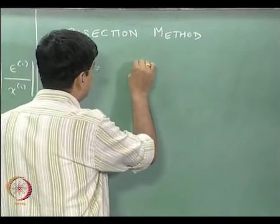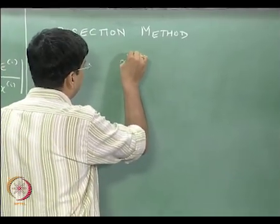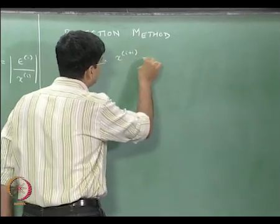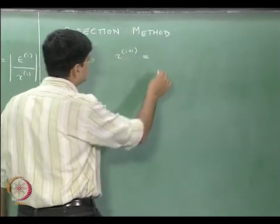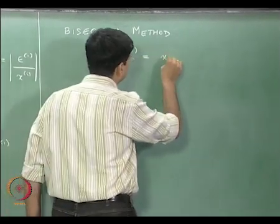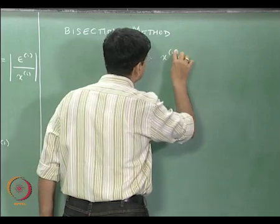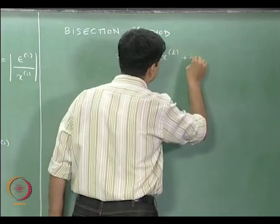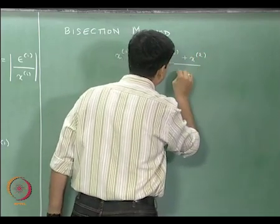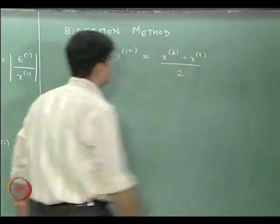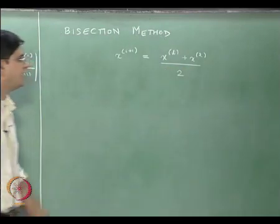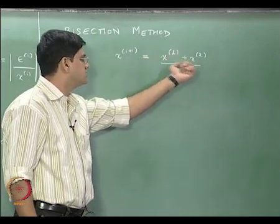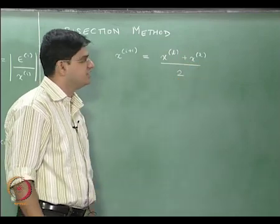At any iteration i, we get x_(i+1) as nothing but x_l plus x_r divided by 2 — an average of our left guess value and the right guess value.